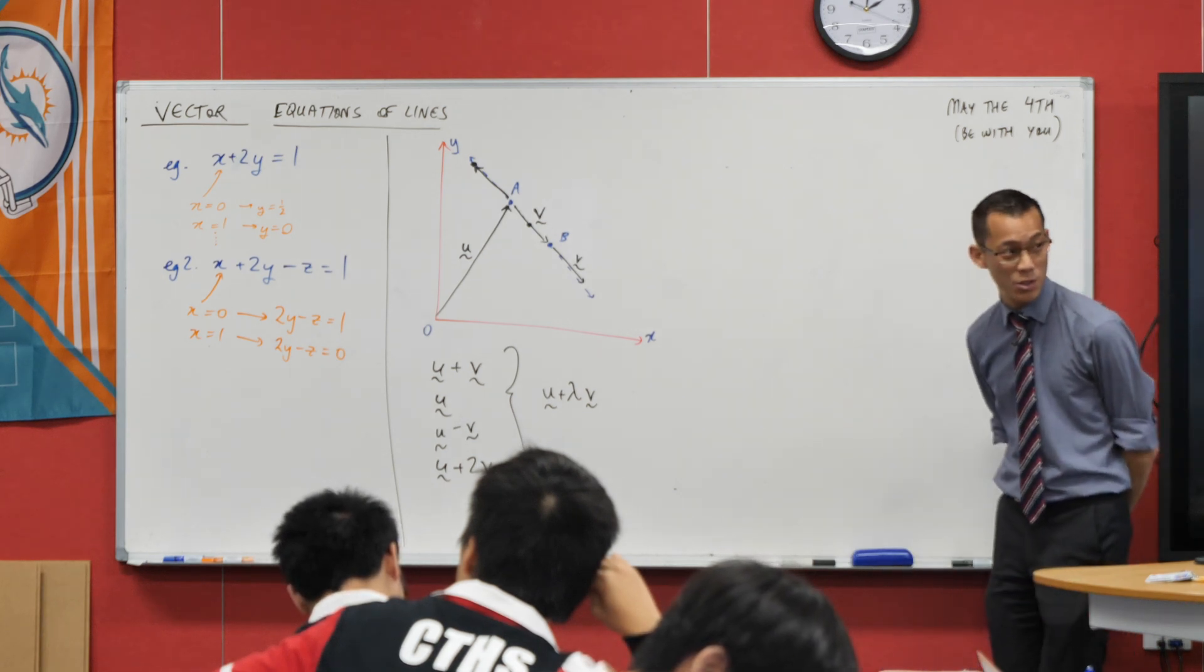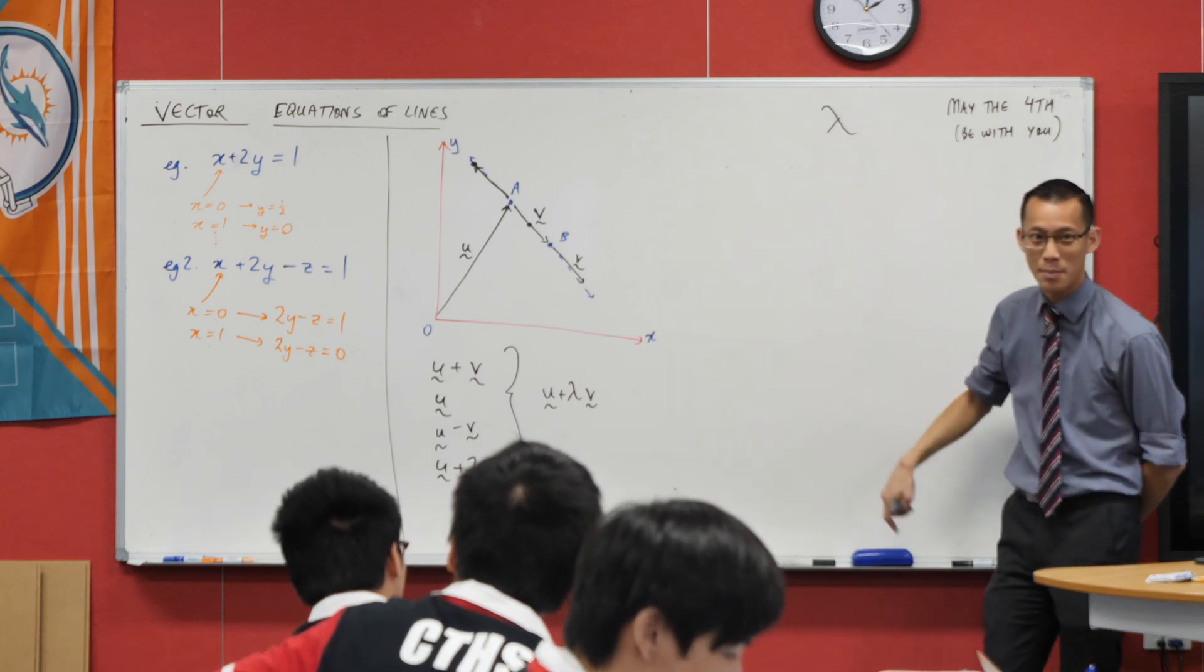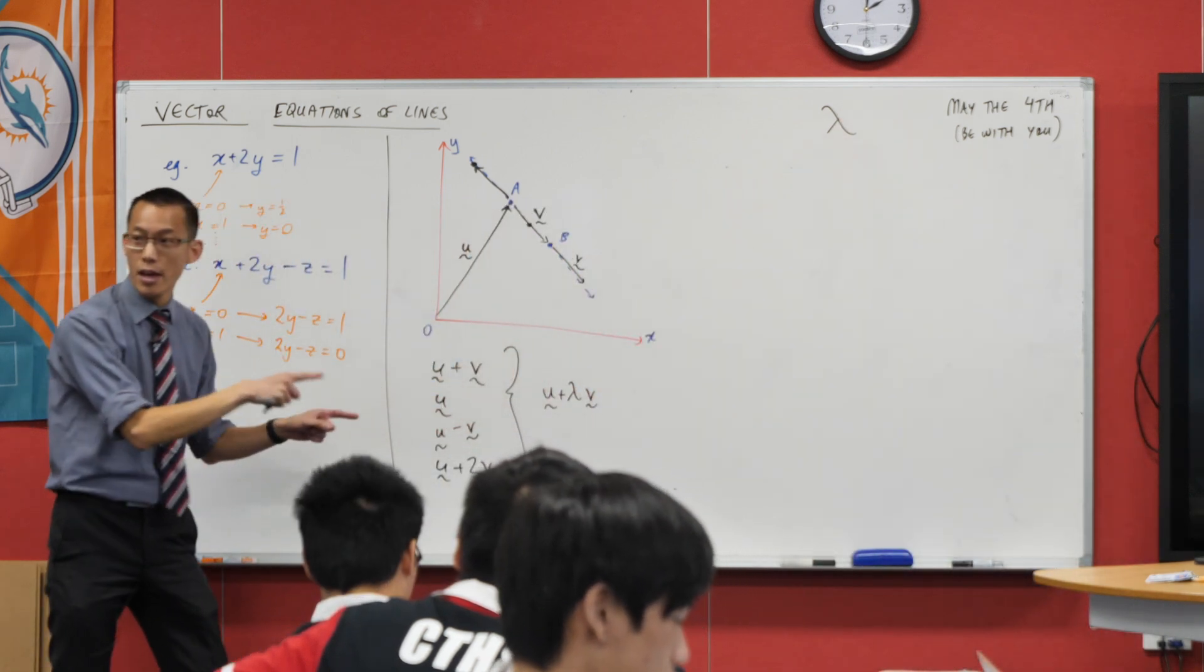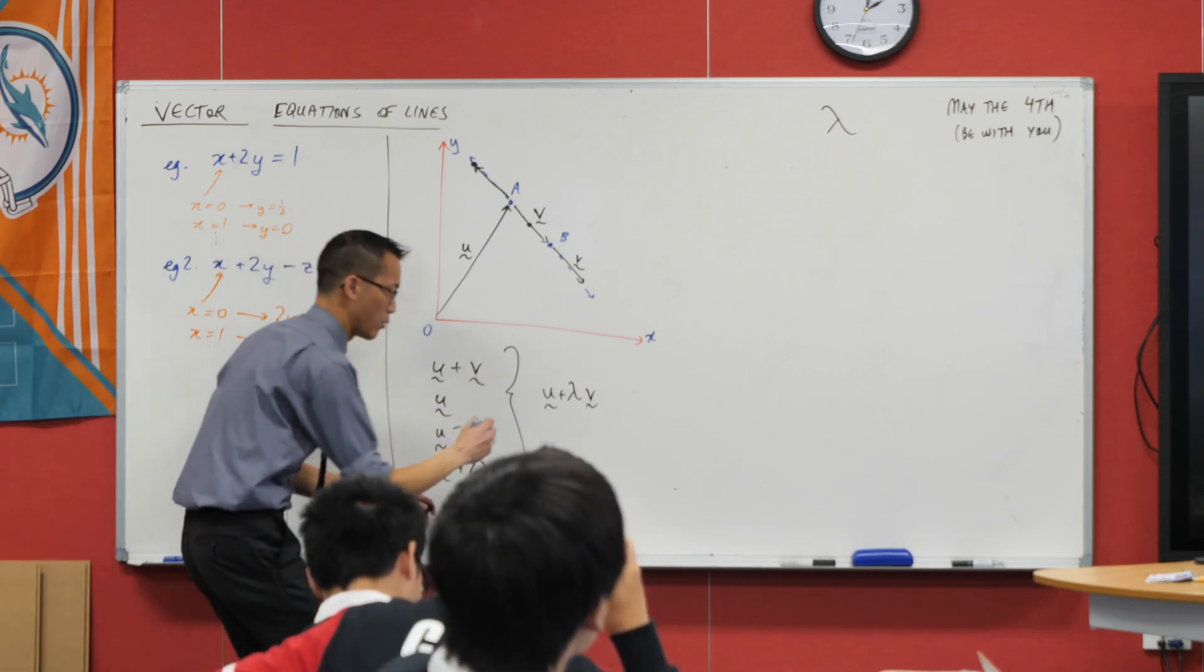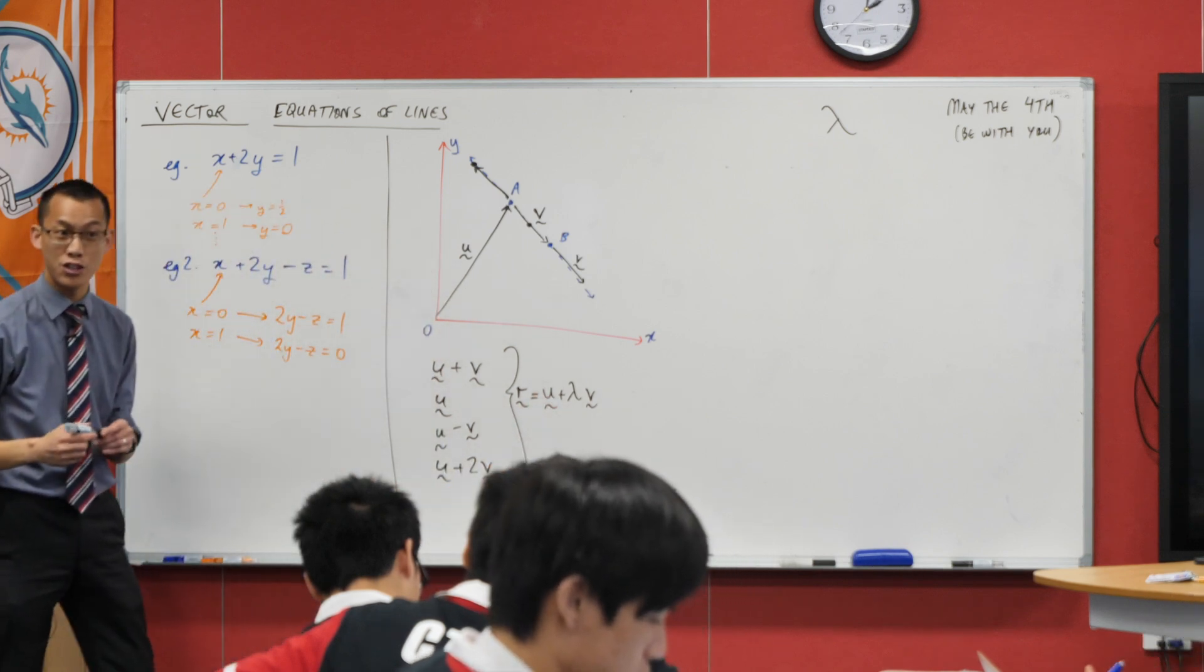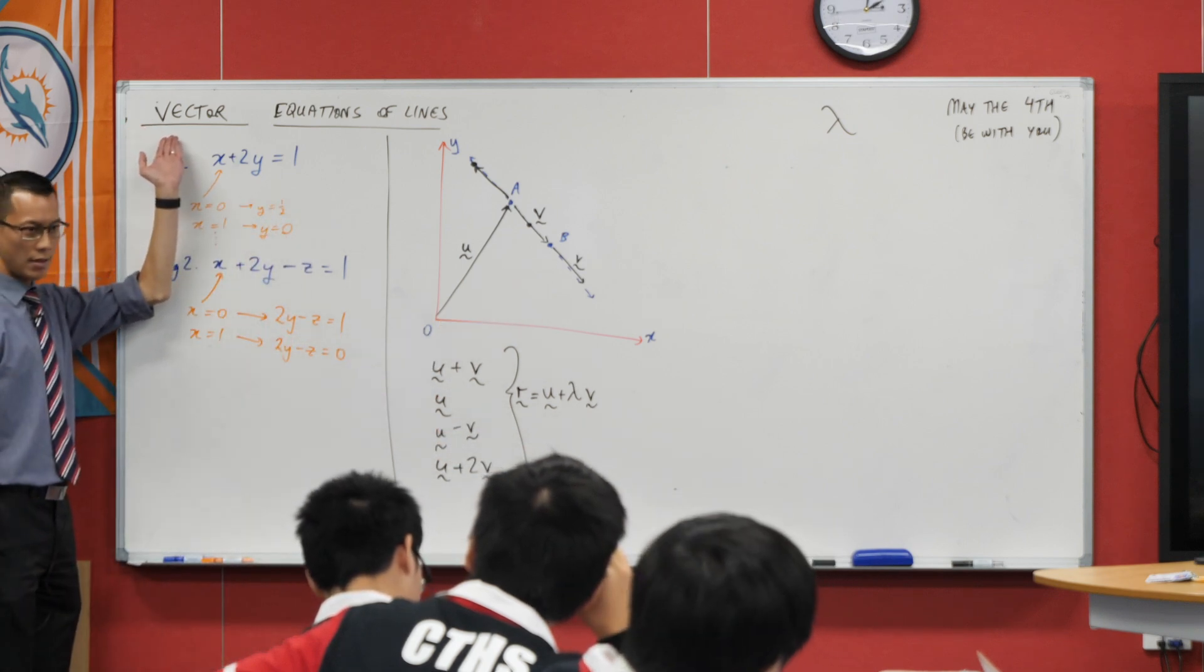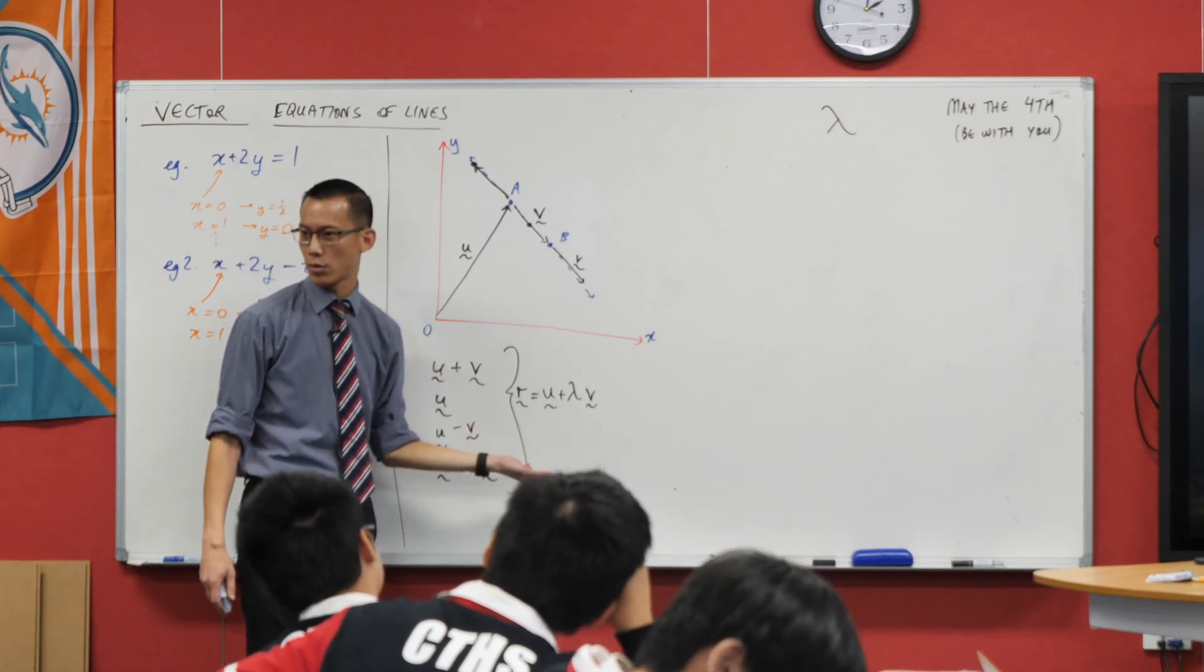If there are any first person shooter fans in the room, it's that symbol that the game Half-Life is based on. So this here, this is the equation of a line. Again, customarily, we would describe it as R. It's just kind of the conventional name for the equation of a line. And importantly, it is not just an equation of a line. It's a vector equation of a line because it uses vectors to explain what's going on.